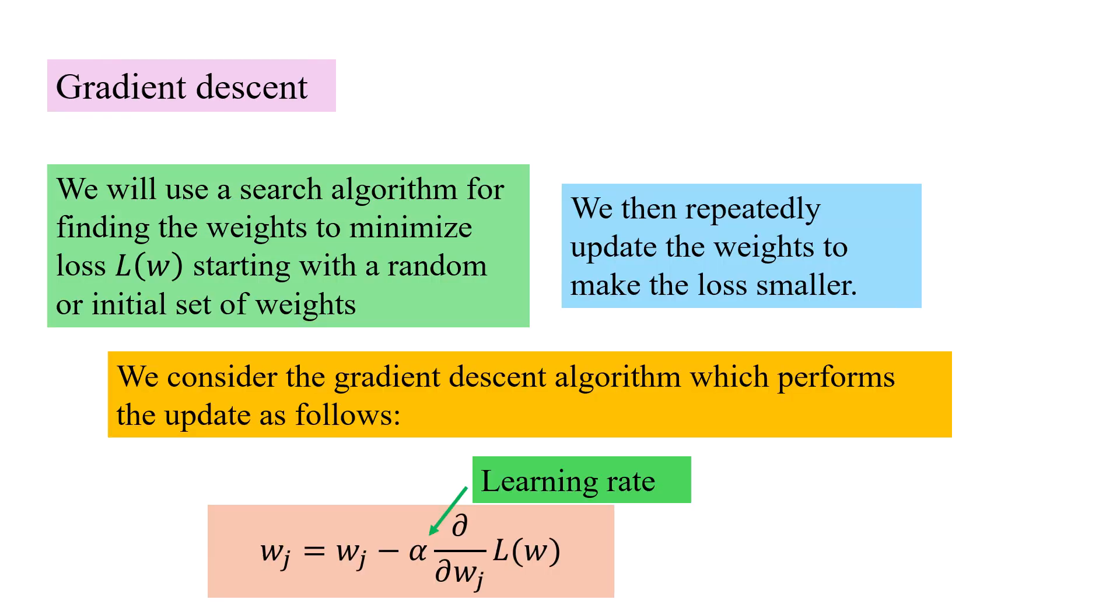Now, how do we minimize this loss function? We use a search algorithm for finding the weights to minimize L(w). We want the best line. We have data points and we would want the best line so that the loss is the minimum. We use a search algorithm where we would start with random or initial set of weights and we go on updating. We use the gradient descent algorithm and the update is as follows.